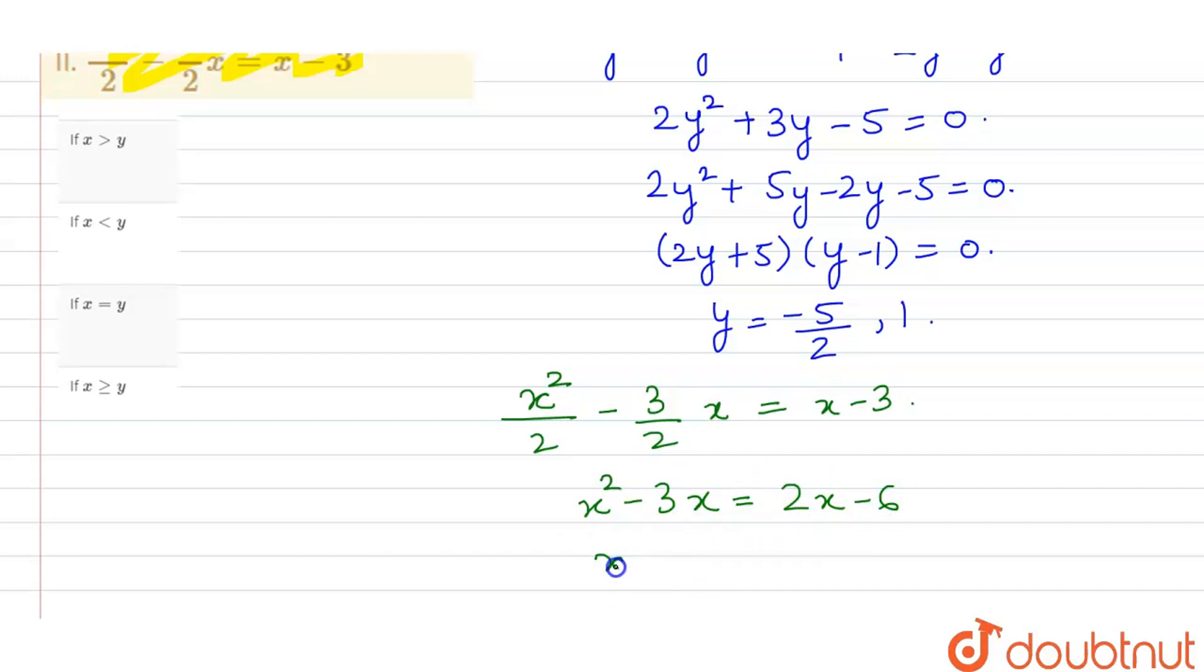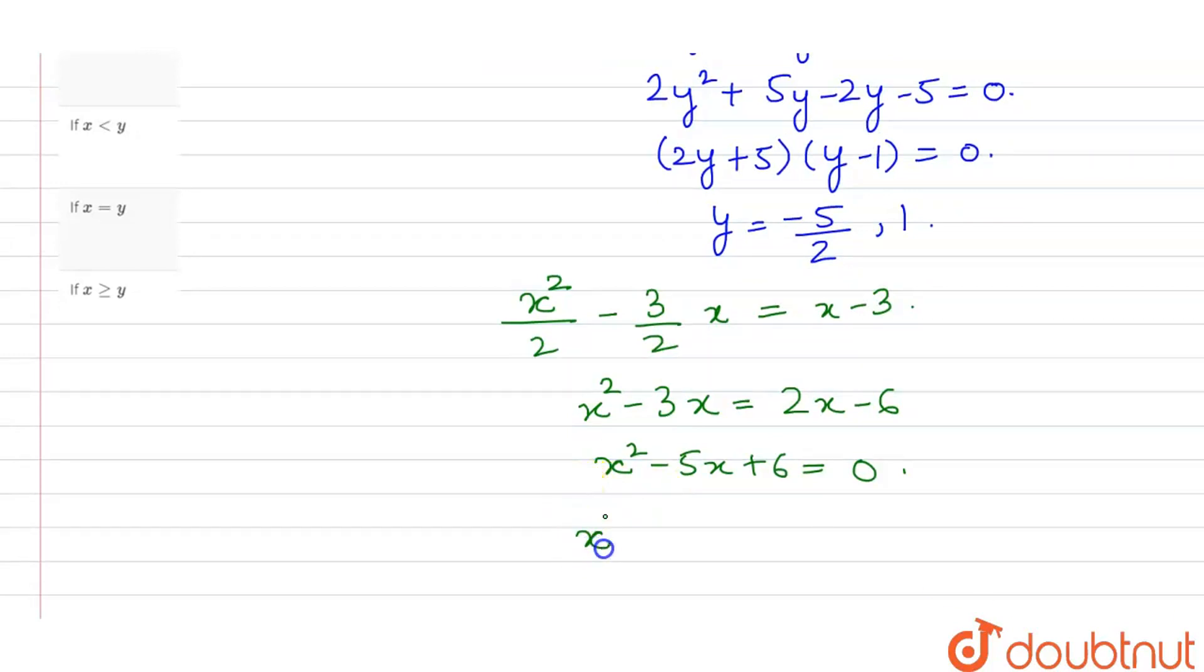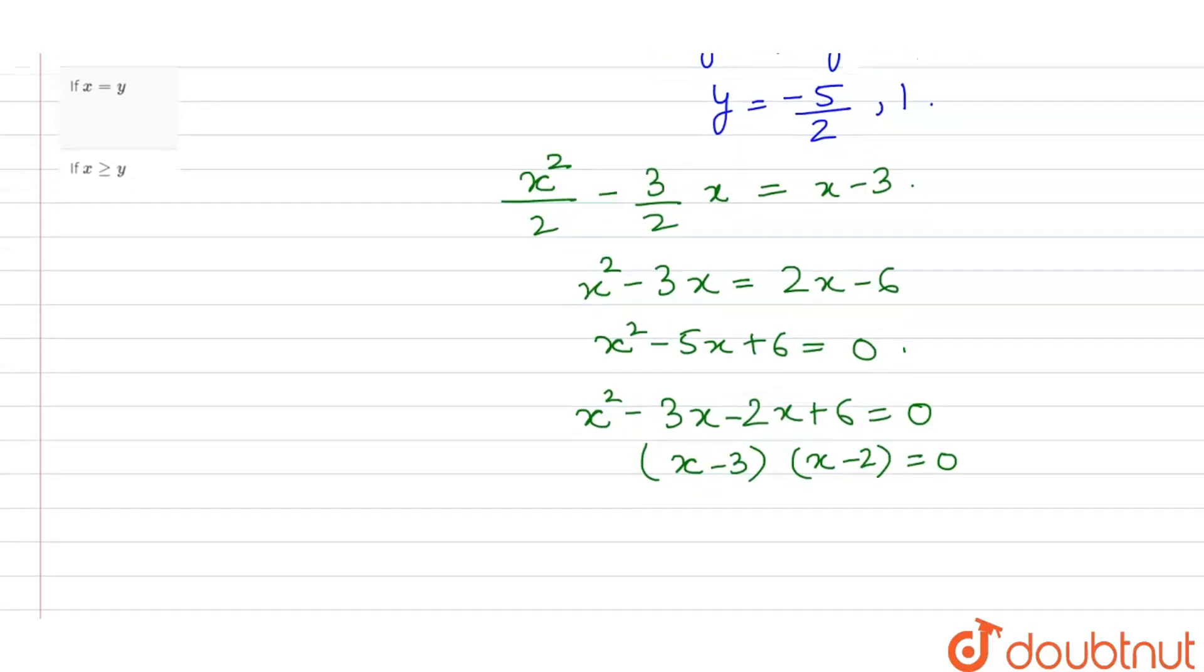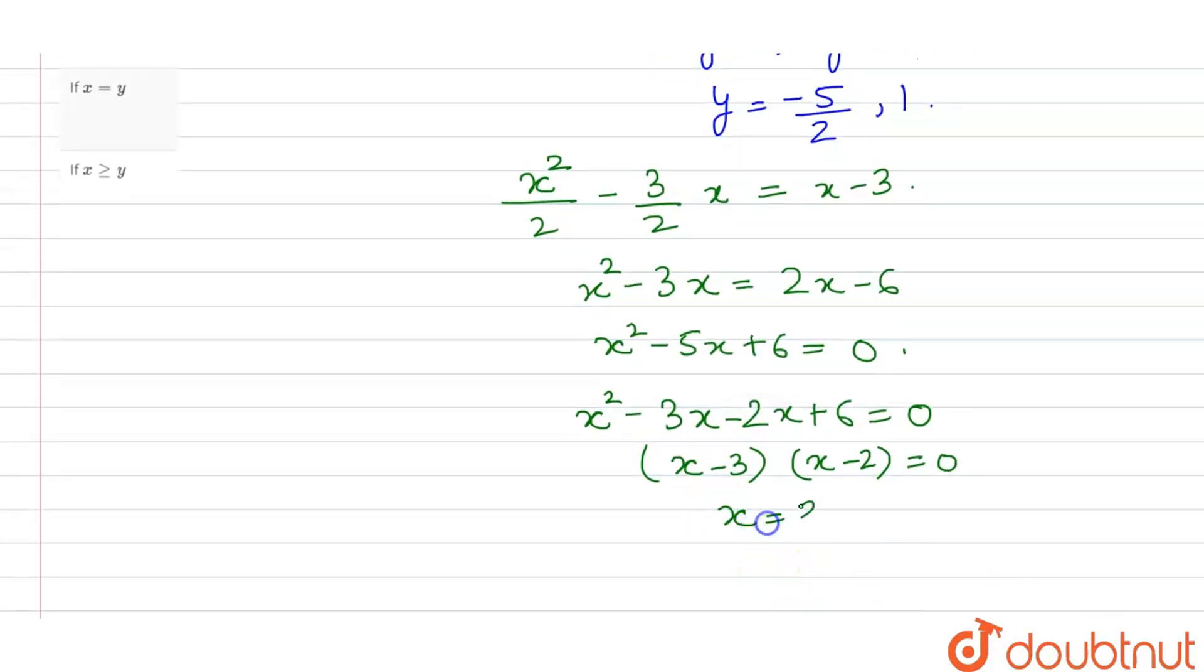This is x² minus 5x plus 6 equals 0. Here we have (x minus 3)(x minus 2) equals 0. The x values are 3 and 2.